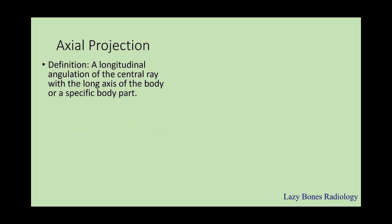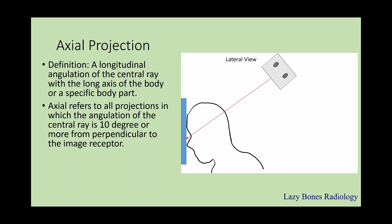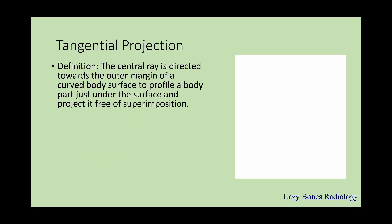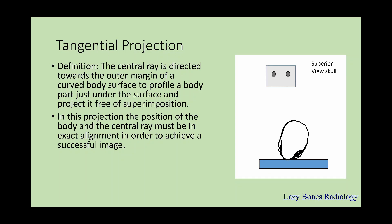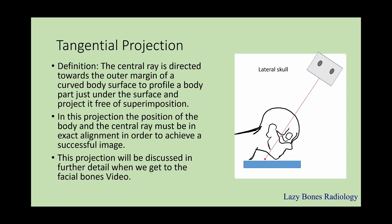Axial projection. By definition, this is a longitudinal angulation of the central ray with the long axis of the body or a specific body part. Axial refers to all projections in which the angulation of the central ray is 10 degrees or more from a perpendicular beam to the image receptor. As we can see here from a lateral view, this is an axial projection. As we can see here with a superior view of the skull and also a sideways picture of the tangential projection, this projection will be discussed in further detail when we get to the facial bones.